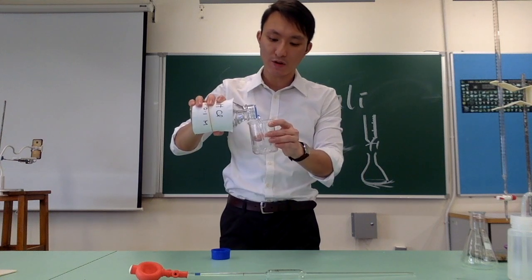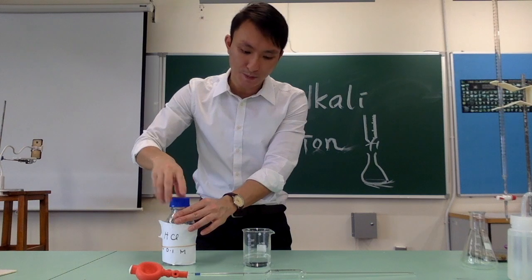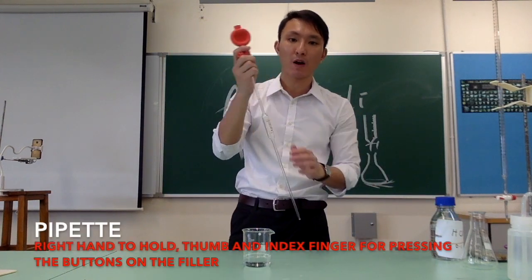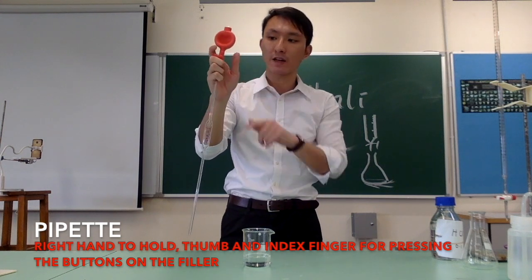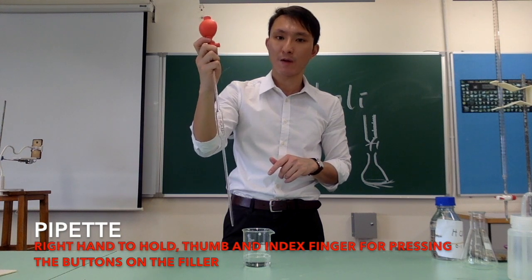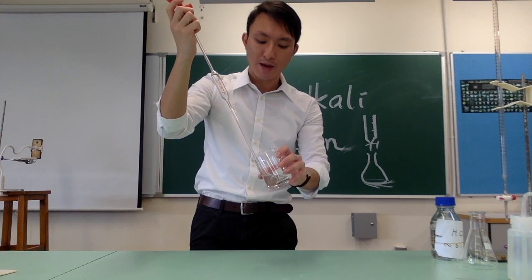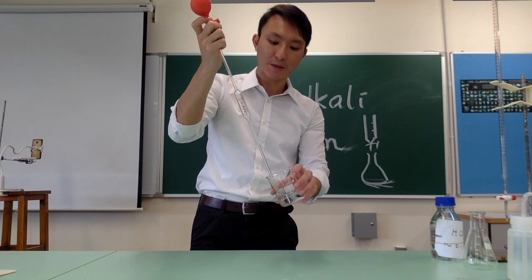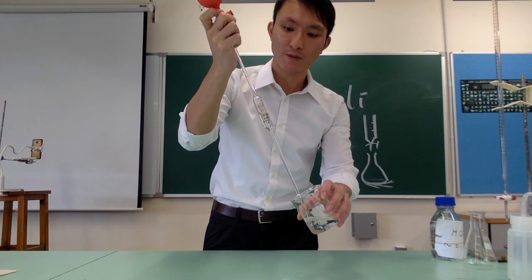Now pour some HCl into the beaker. Hold the upper part of the pipette with your right hand, making sure your thumb and index finger are available to press the buttons of the pipette filler. Put the pipette into the solution and press the up button to suck the solution up into the pipette.